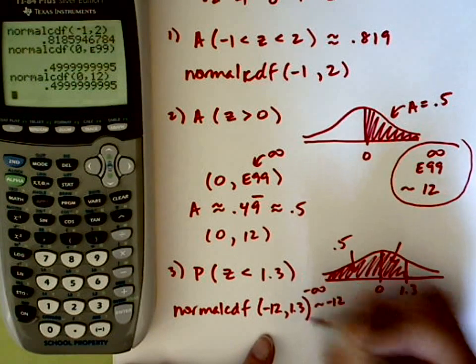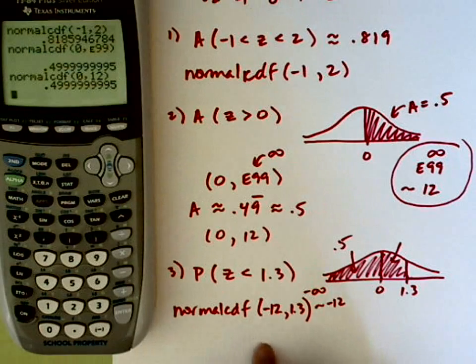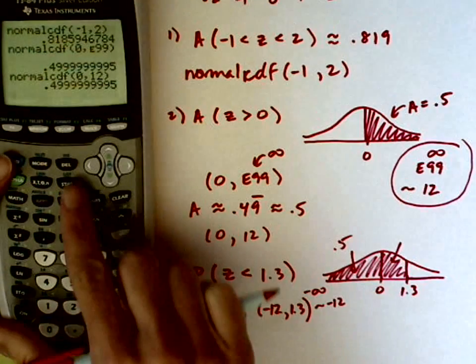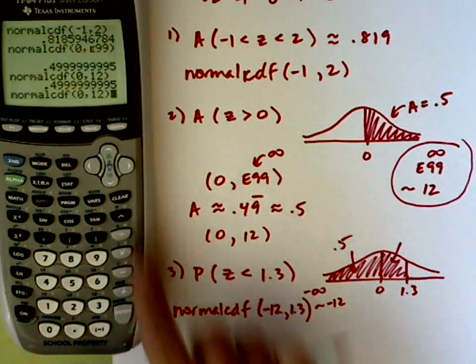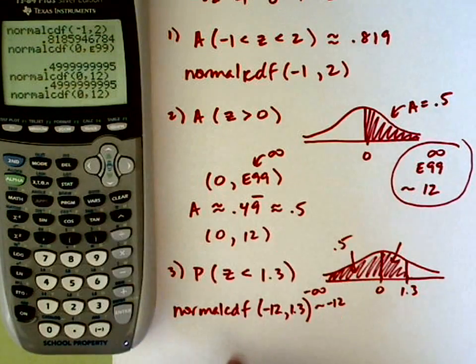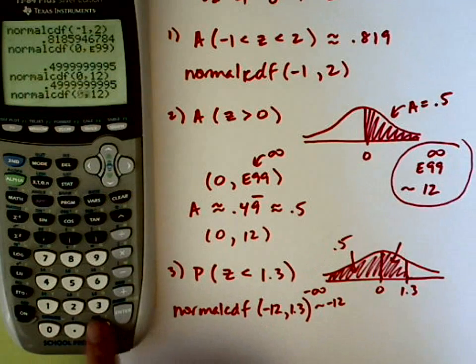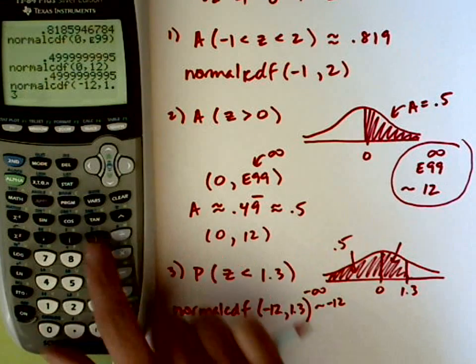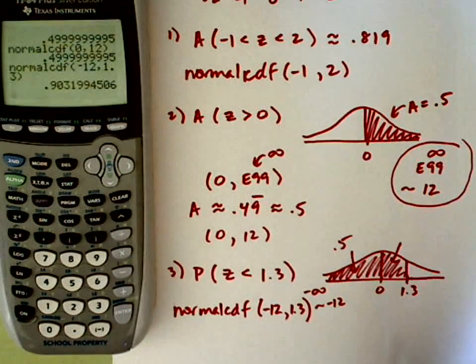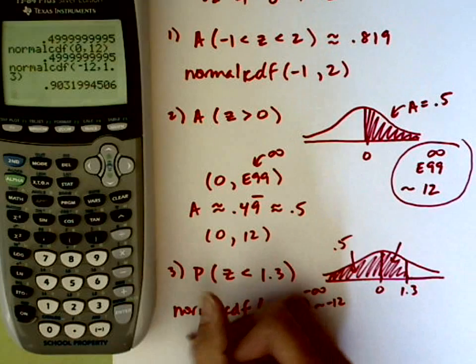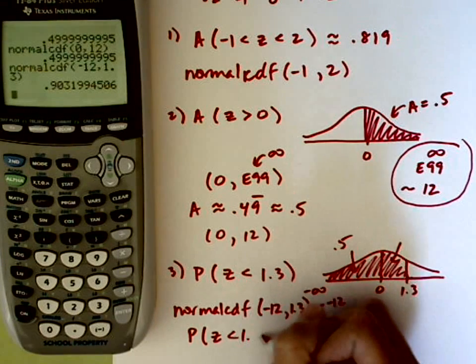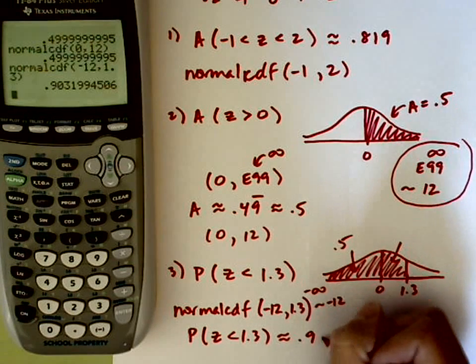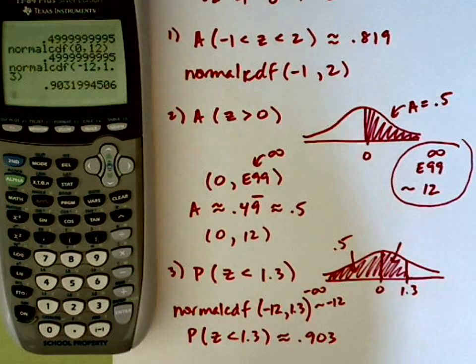I just barely had enough room. Now I'm going to use the second entry feature again, but you can also go to the distribution menu. I'm going to use second entry. Now I can edit this. I'm going to change the 0 to negative 12, comma, and I want a 1.3 for the rightmost. I'll close that with a parenthesis, and I come up with an area that we expected. So the probability that a z-score is less than 1.3, certainly greater than 0.5, we get 0.903 if I round to three decimal places.